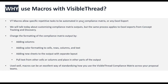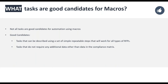So that's really what we're aiming for with this feature. It's important to bear in mind that some tasks are good candidates for automation and some are not. Good candidates are tasks that can be described using a very simple set of repeatable steps that will work for all kinds of documents in VisibleThread — tasks that do not require any additional data other than the information already in the compliance matrix.